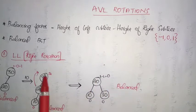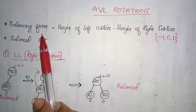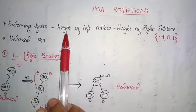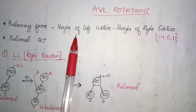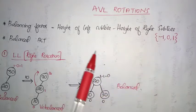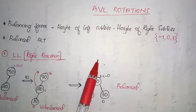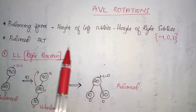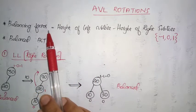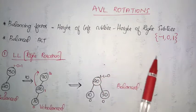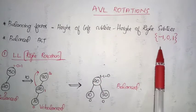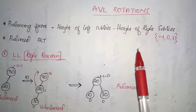In an AVL tree there is a term called balancing factor. This balancing factor is nothing but the difference between the height of the left subtree and the height of the right subtree of a specific node. The value of the balancing factor should always be between minus 1, 0, and 1.